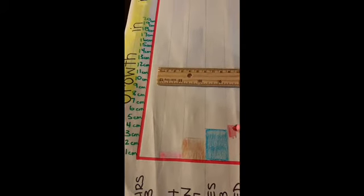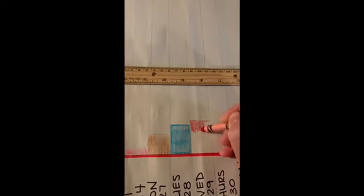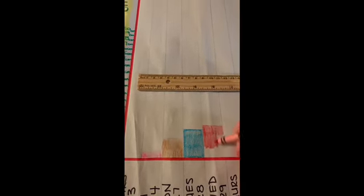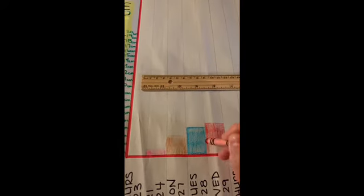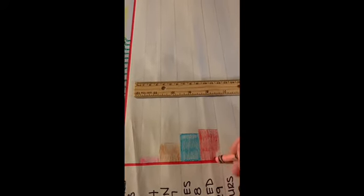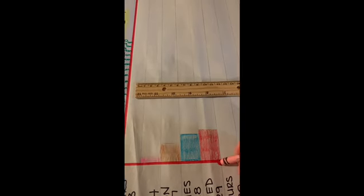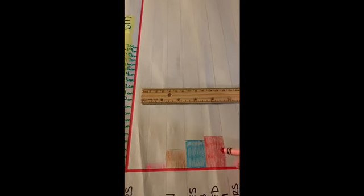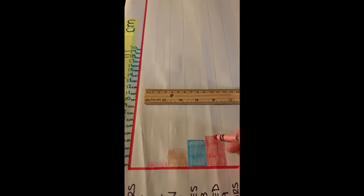So now I'll just quickly color in my bar. And there we go. So there is the bar for our lettuce. Much different than the bar for our peas.